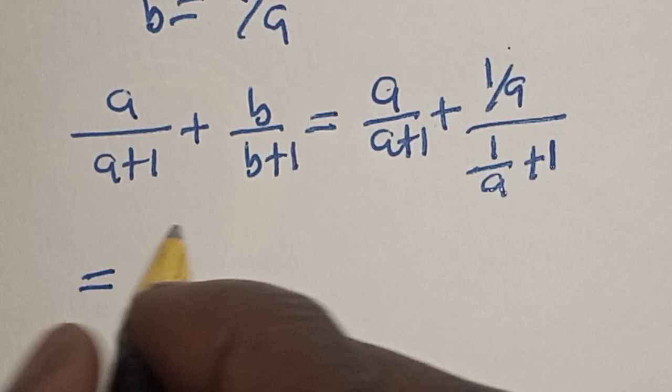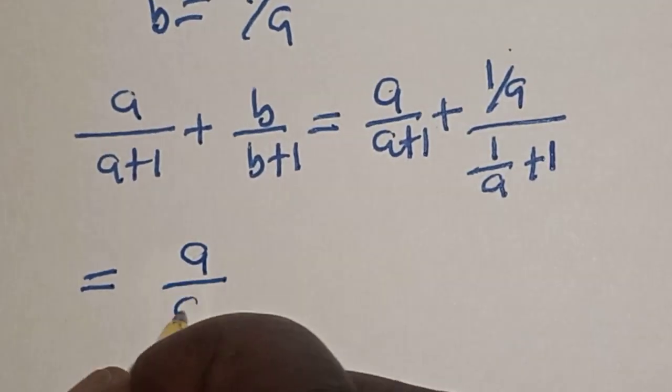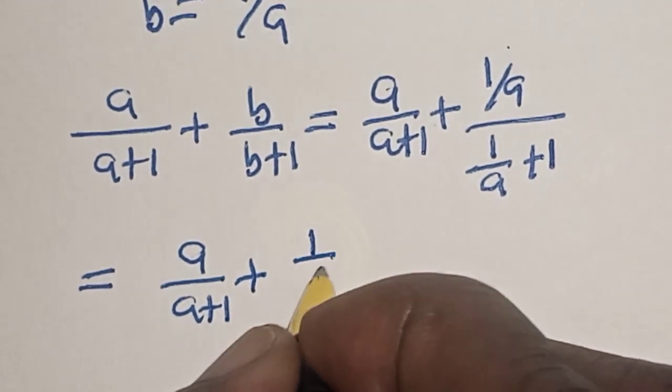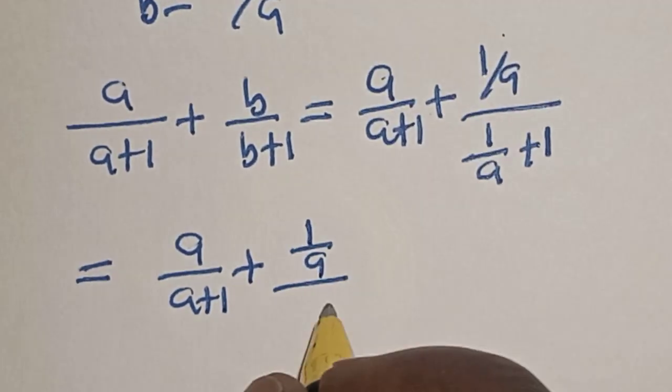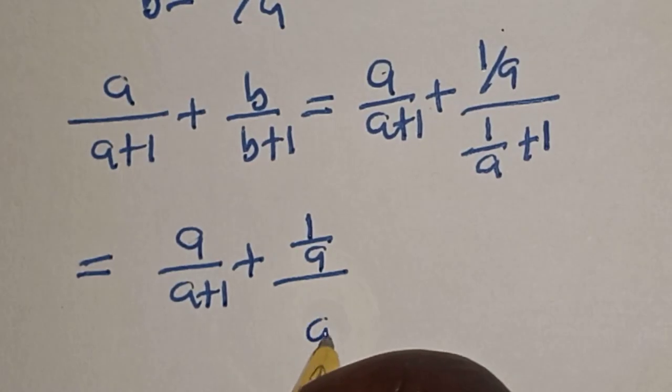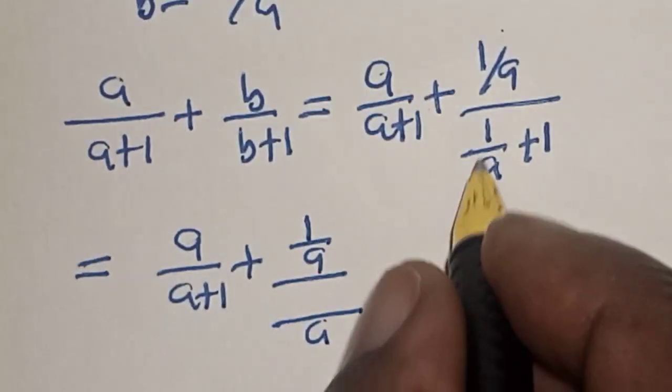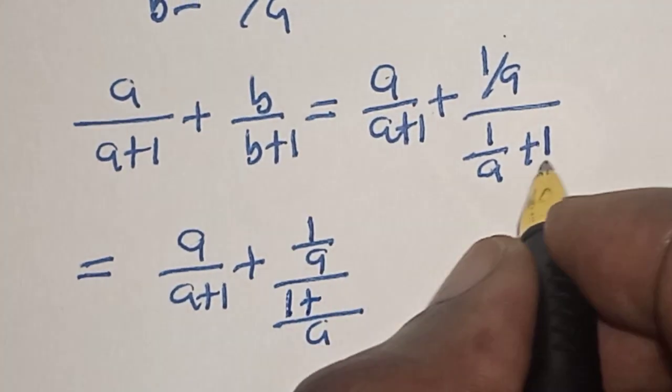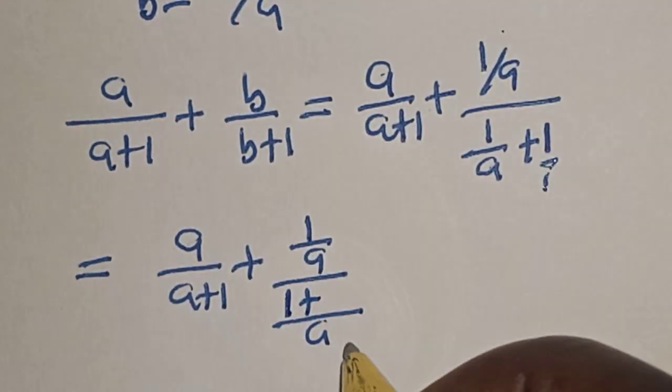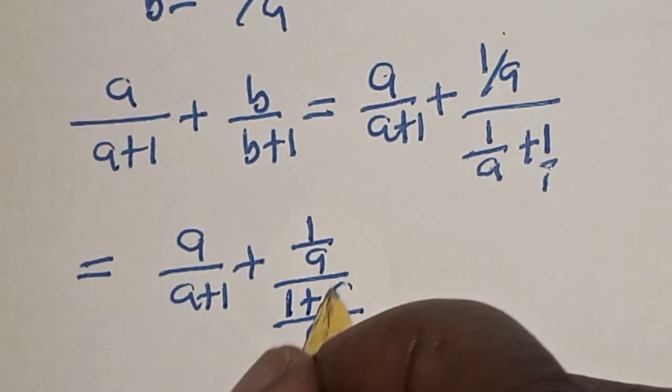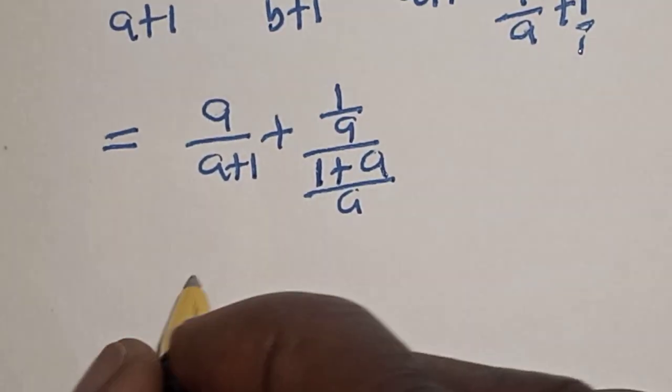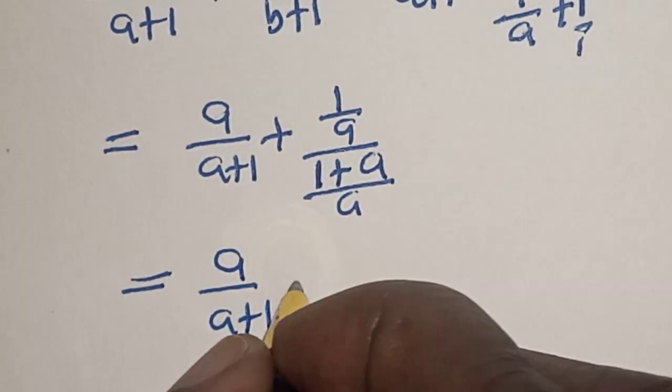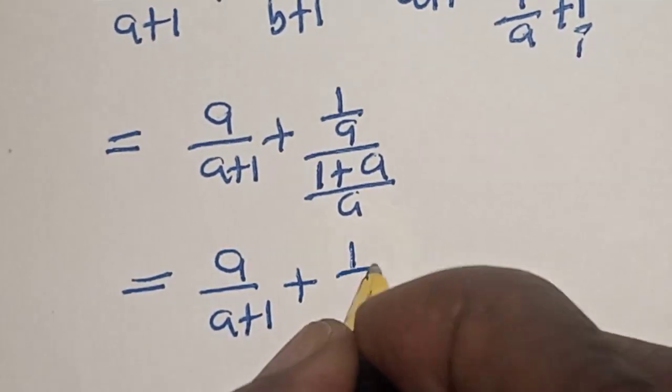Then this is equal to a over a plus 1 plus 1 over a over, from here, 1 over a plus 1. Then this is equal to a over a plus 1 plus 1 over a.